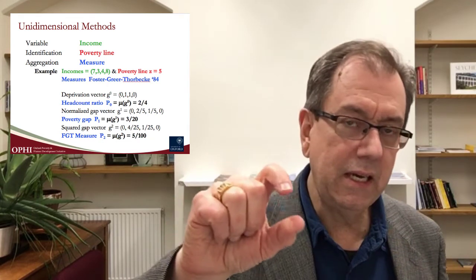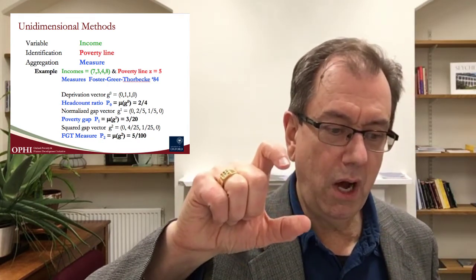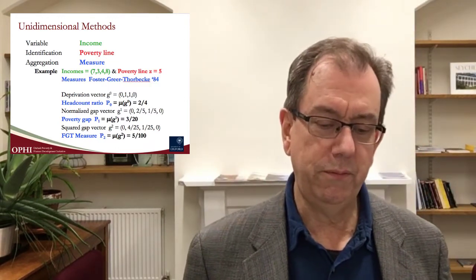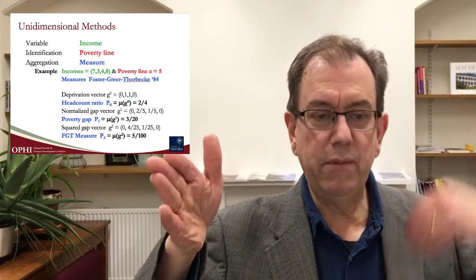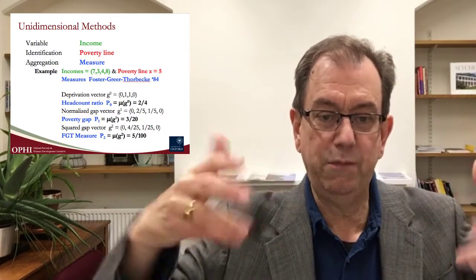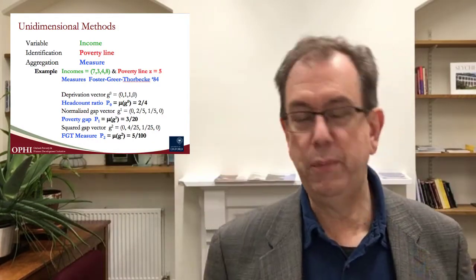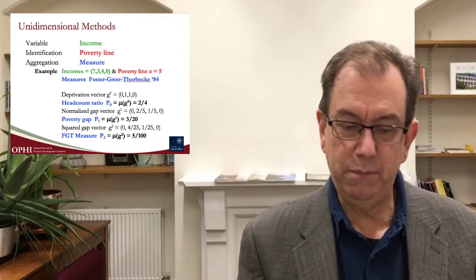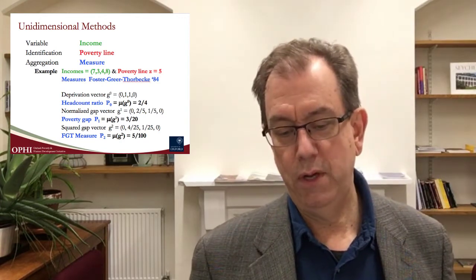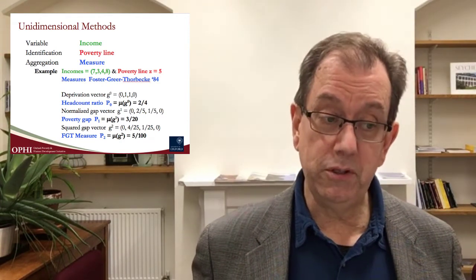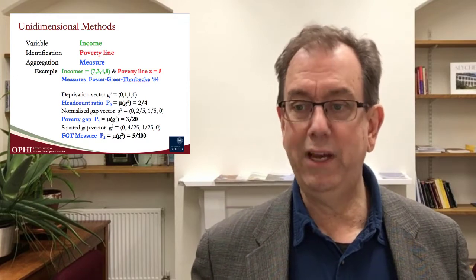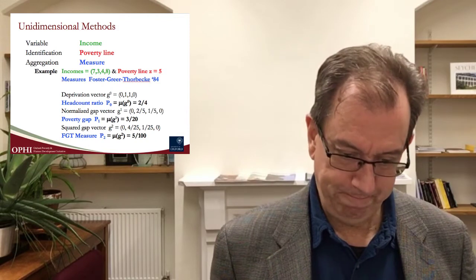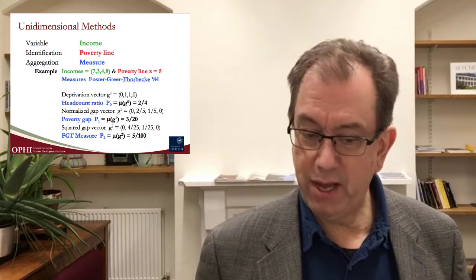If you are interested in getting information on the depth of poverty, then perhaps a normalized gap vector would be helpful. It takes the poverty line minus the income and puts it over the poverty line to look at a kind of percentage shortfall from the poverty line that a person has. Take a look at person 2 and see if it matches up with your intuition. Once you have done this for each poor person and looked at zeros for each non-poor person, average it up — you get the so-called poverty gap measure. In this case, it's 3 out of 20.